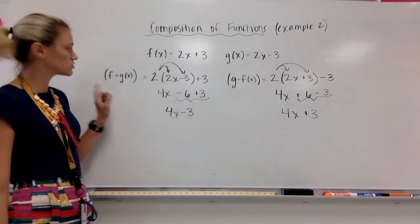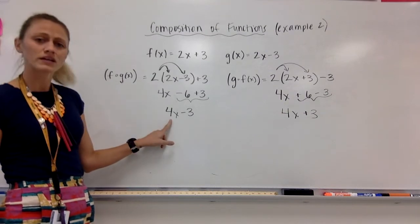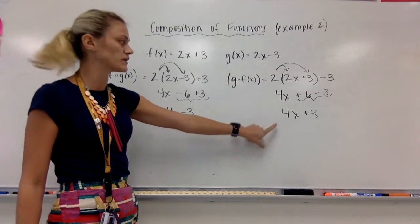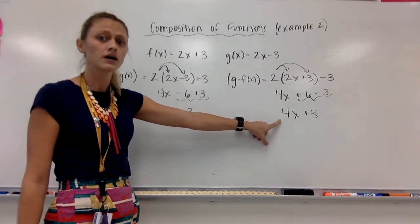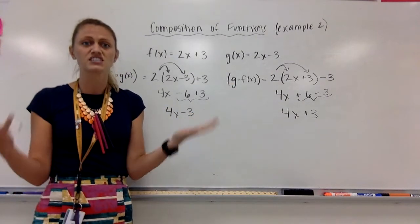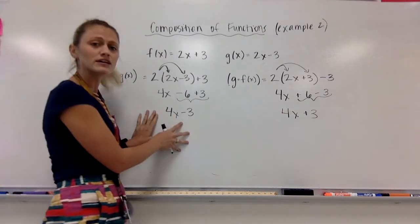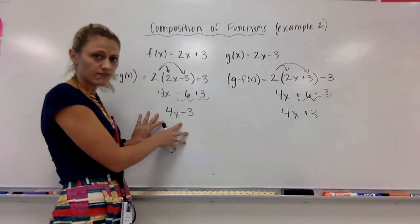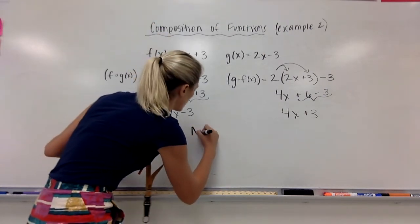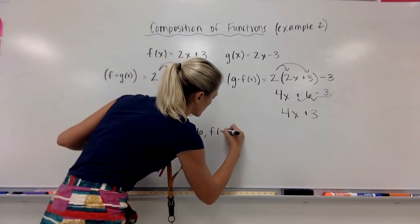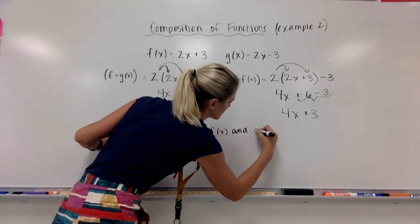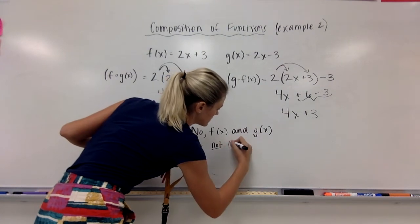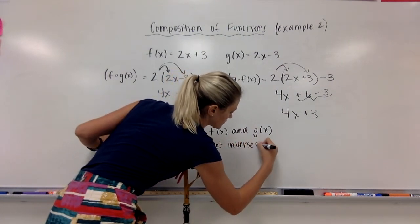Notice for our first composition we did f of g of x, we ended up with 4x minus 3. For our second composition, g of f of x, we ended up with 4x plus 3. Neither one of these gave me just an x. If you get something that is not just an x, they are not inverses of each other. So no, f(x) and g(x) are not inverses.